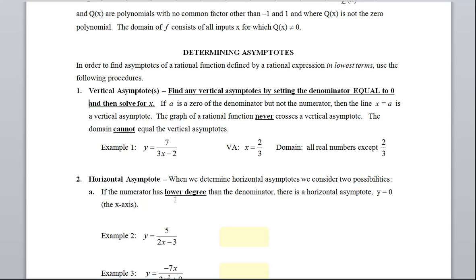If the numerator has a lower degree, so I need to look at numerator and denominator and see what my largest exponent is. So if the numerator has a lower degree than the denominator, there is a horizontal asymptote, and it's y equals zero. It's automatic, y equals zero.